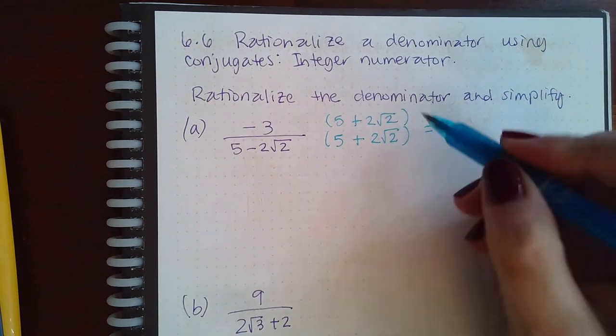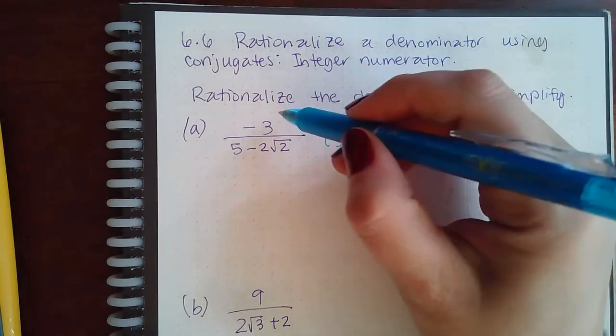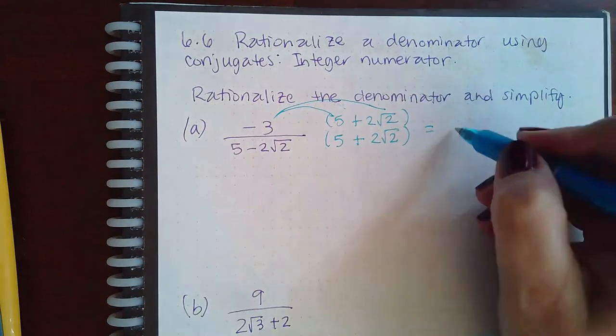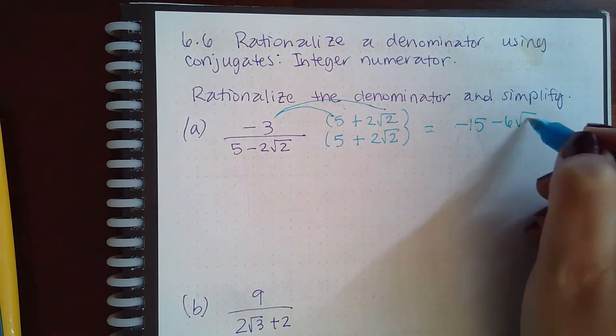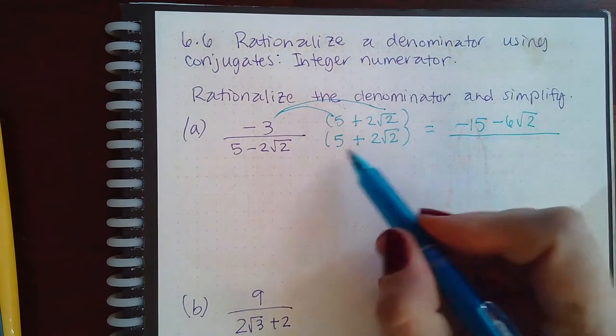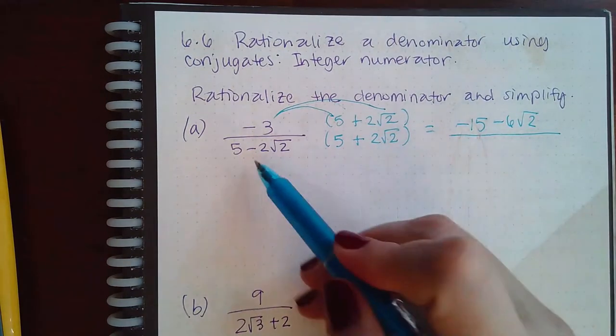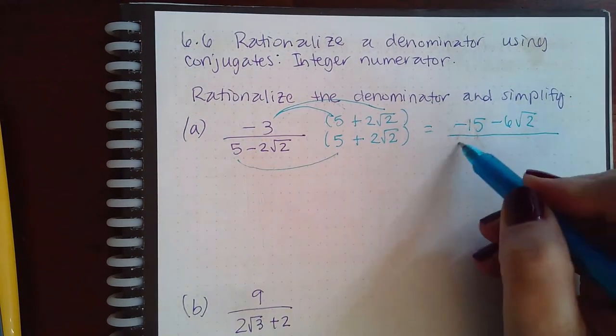So for the top, I'm literally just distributing and that's it. So I get negative 15 and negative 6 square root of 2. For the bottom, I have to FOIL it out. So 5 times 5 is 25.